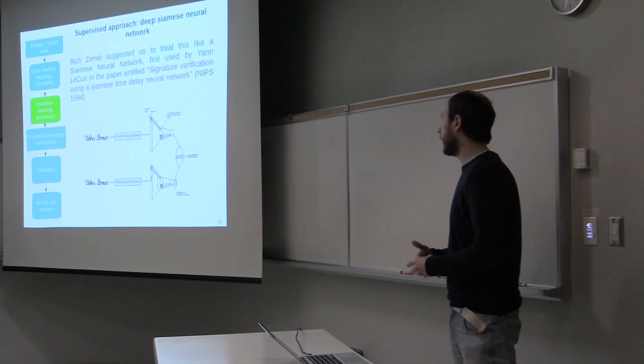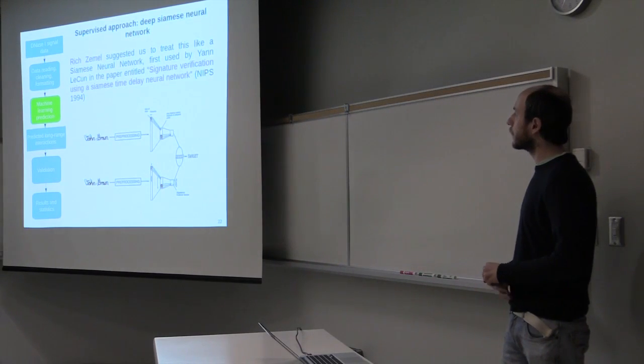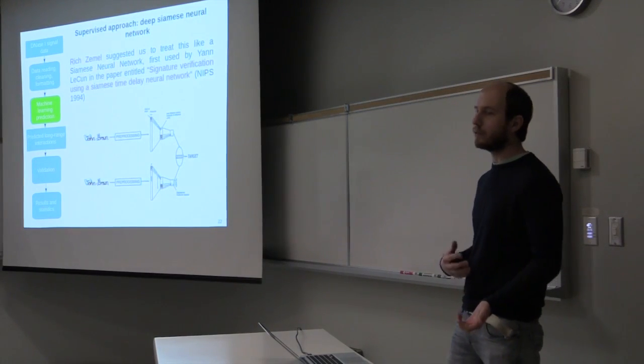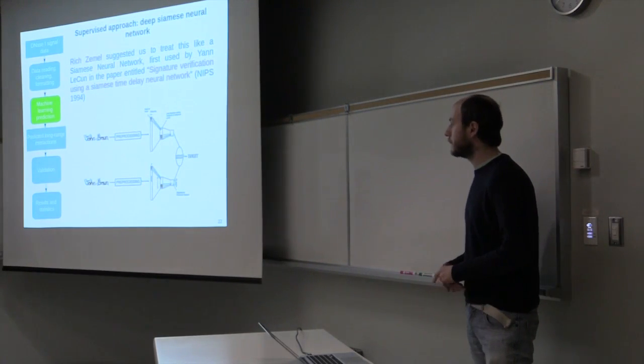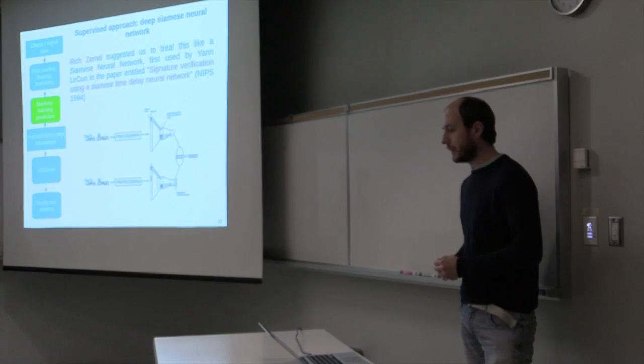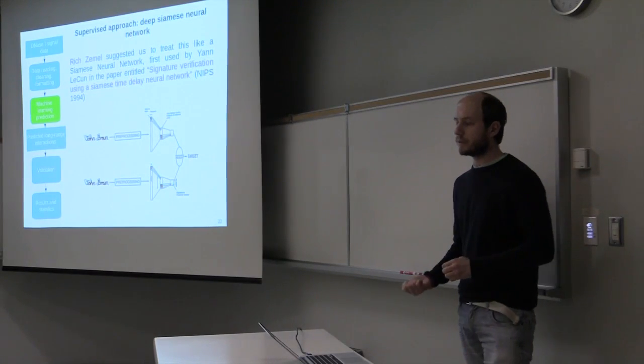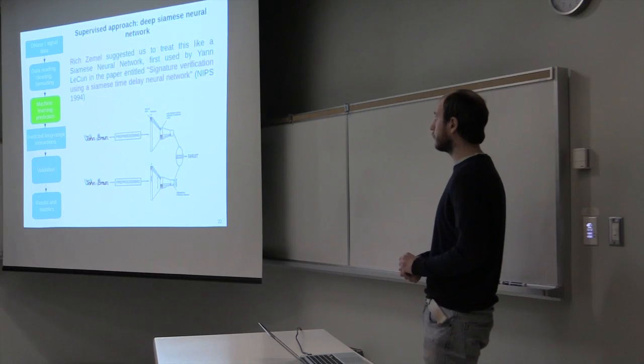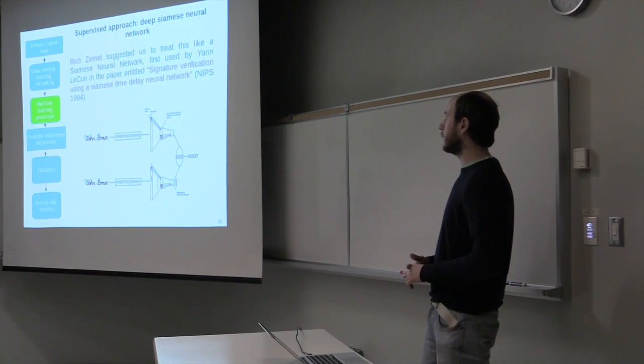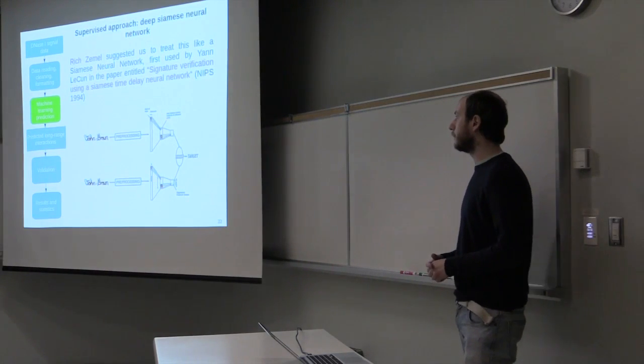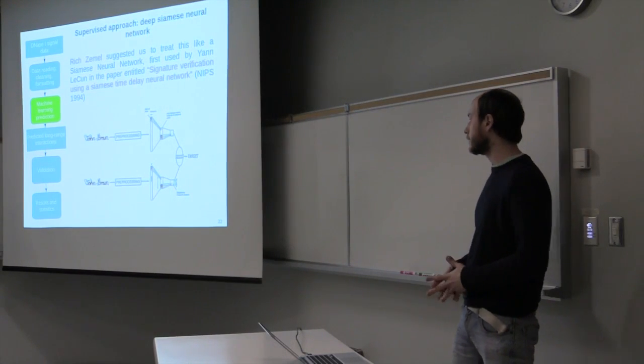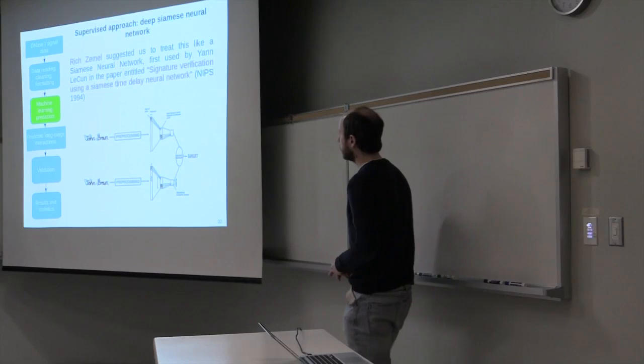As an algorithm, we used a siamese neural network. We tried some algorithms that didn't work. We talked to Gregory Koch here at the Computer Science Department of University of Toronto. And he suggested us to use this siamese neural network that was introduced 20 years ago for the detection of forgeries among handwritten signatures.